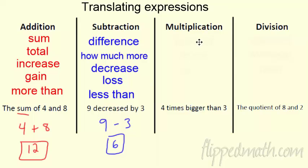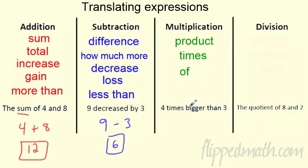For multiplication, there aren't as many keywords. The big one is product — that's what you call the result of multiplying two numbers. You'll also see times, multiply, and of. So '4 times 3' is just 4 times 3, which is a numeric expression that evaluates to 12.